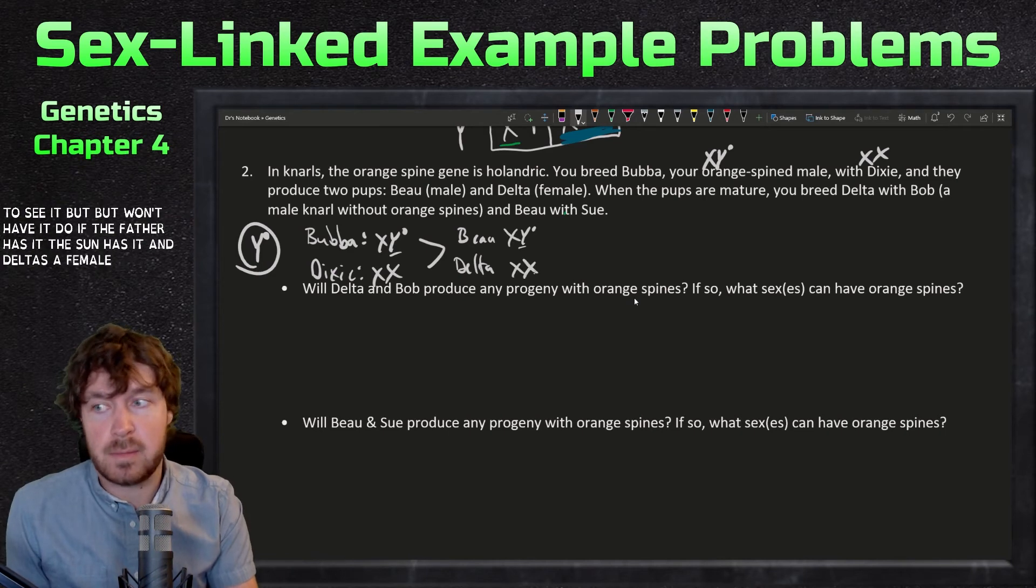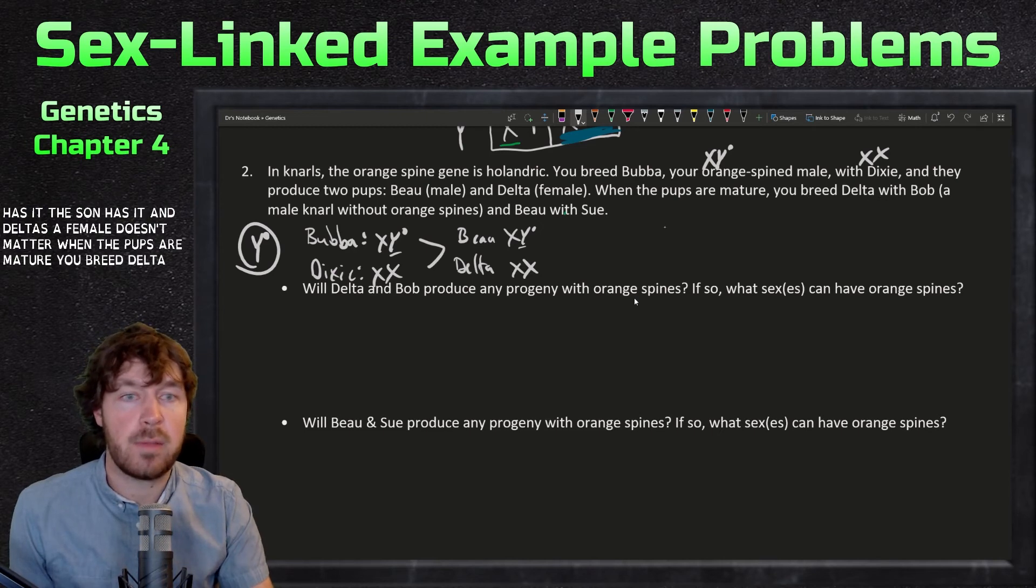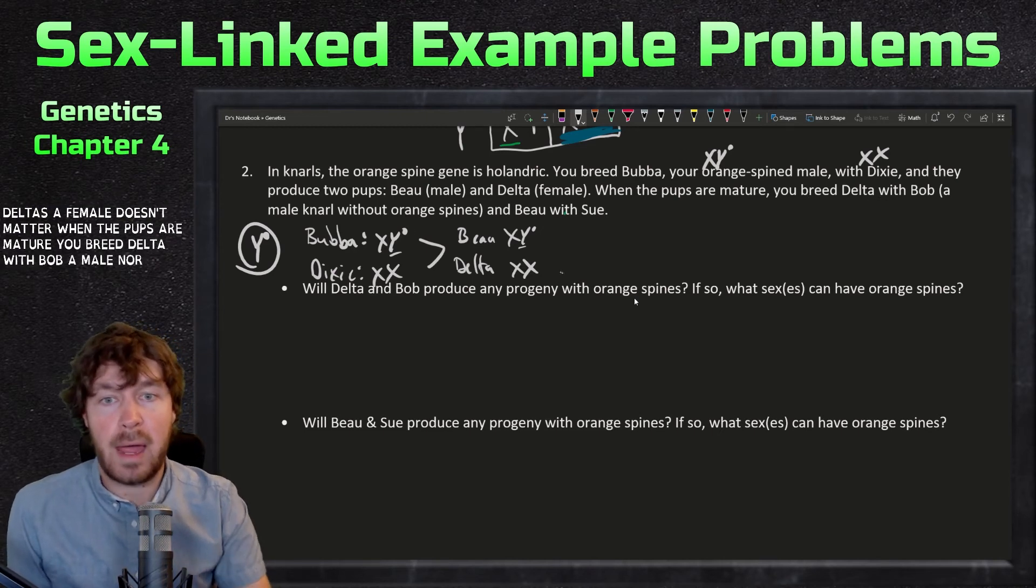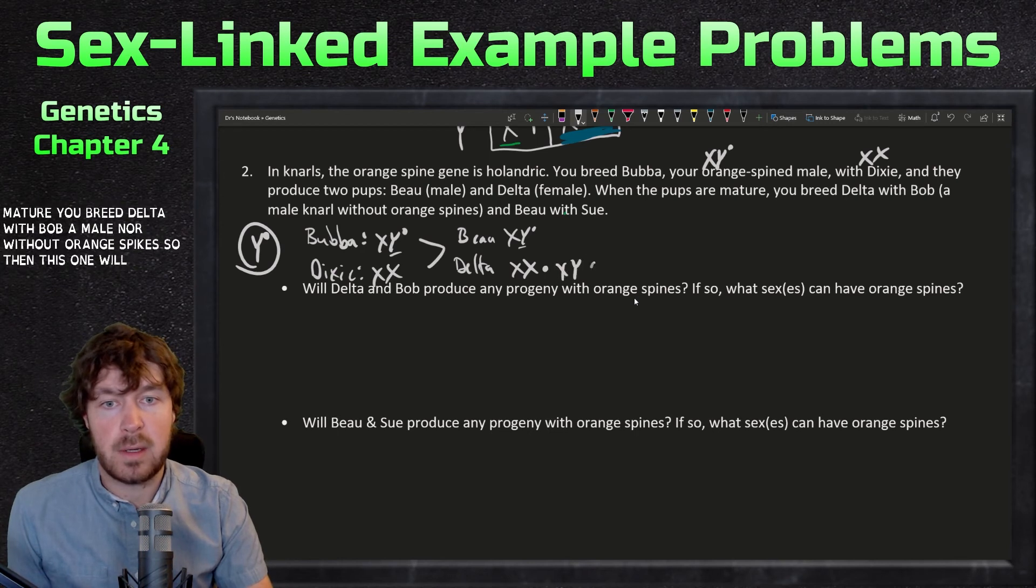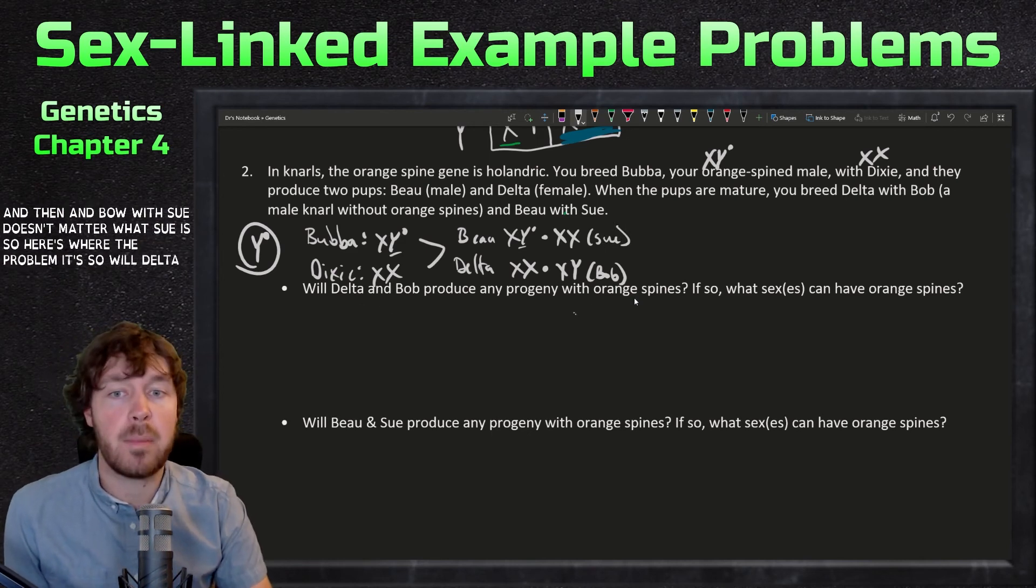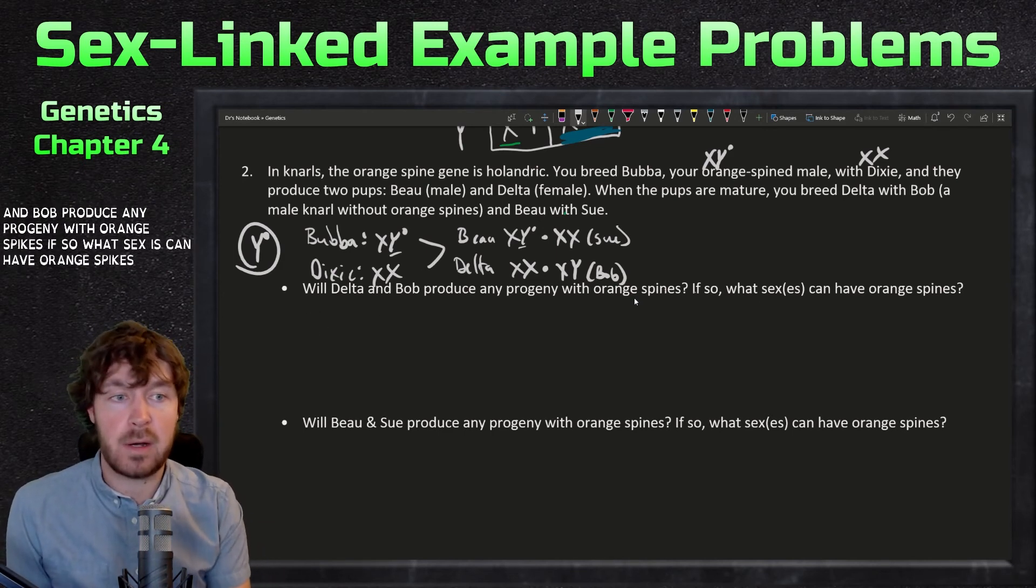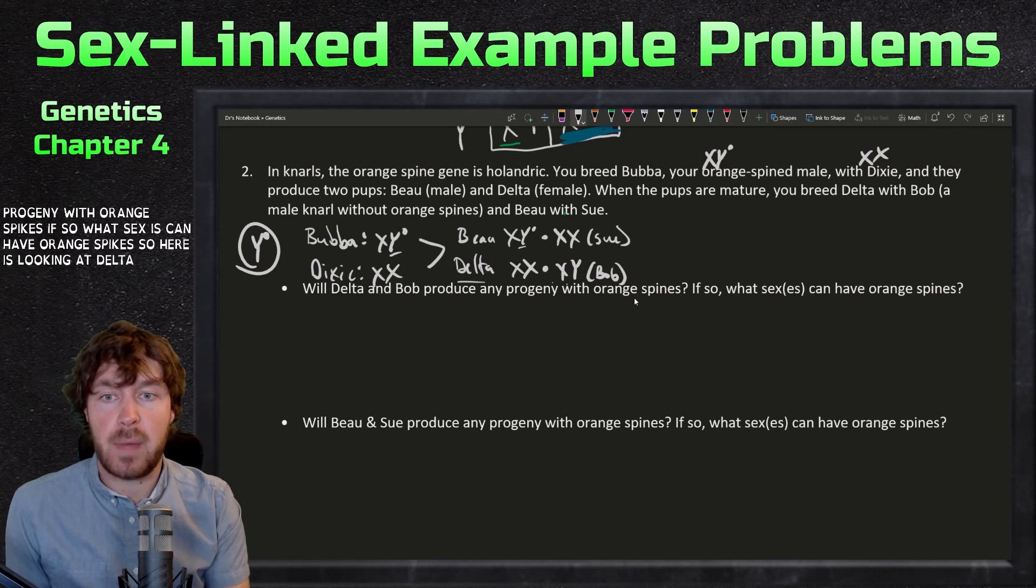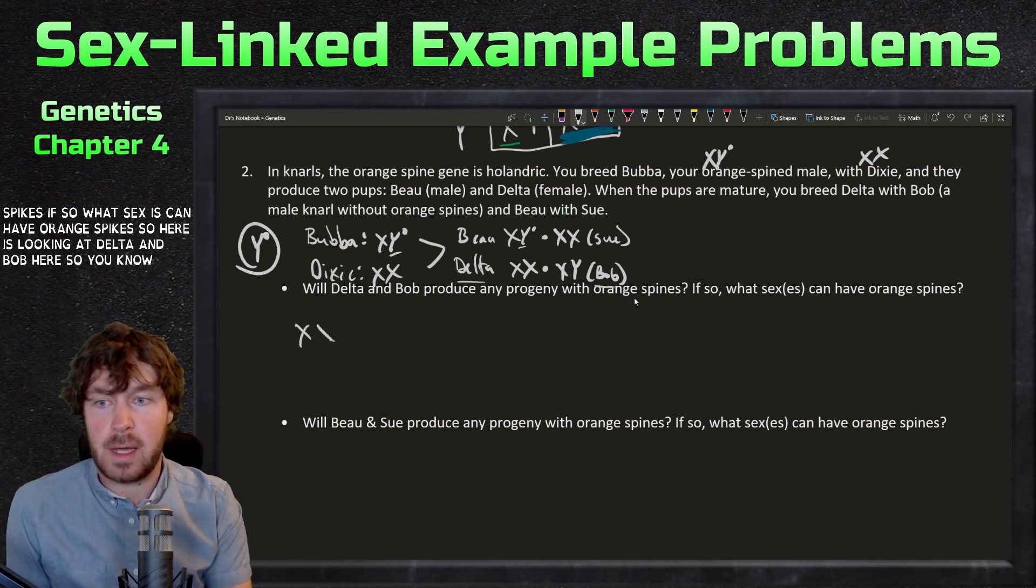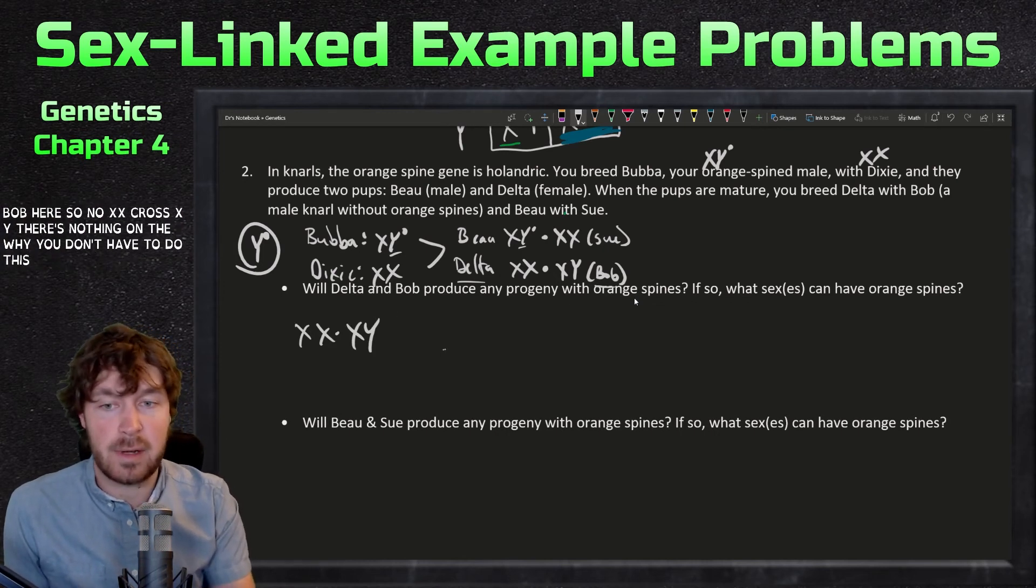When the pups are mature, you breed Delta with Bob, a male gnarl without orange spikes. This one will be Bob, and Bo with Sue, doesn't matter what Sue is. So here's where the problem is: will Delta and Bob produce any progeny with orange spikes? If so, what sexes can have orange spikes? Here it's looking at Delta and Bob, so XX cross XY. There's nothing on the Y. You don't have to do this cross to figure out. This one, no, none of the progeny will have orange spines. It will no longer present itself.